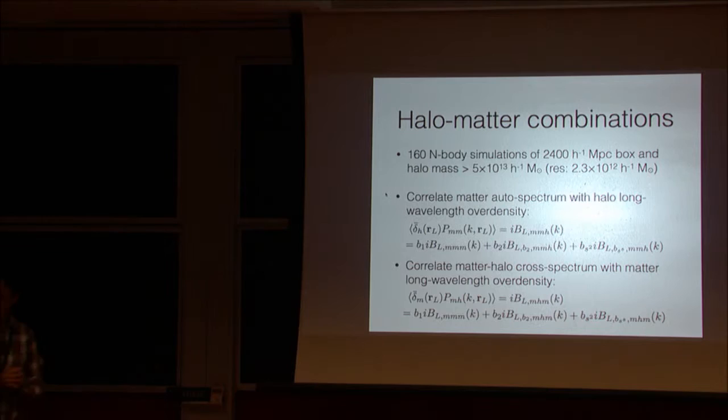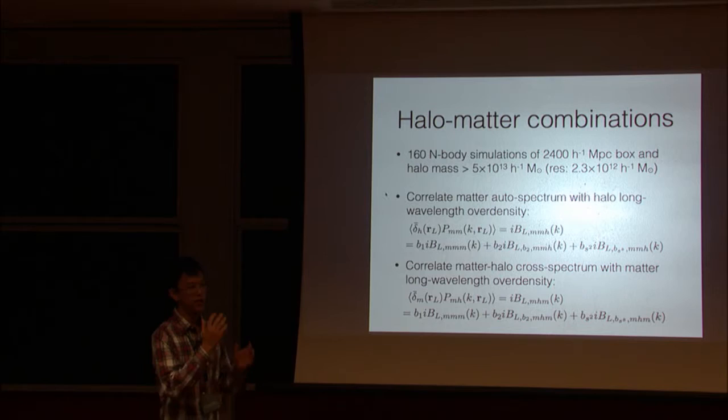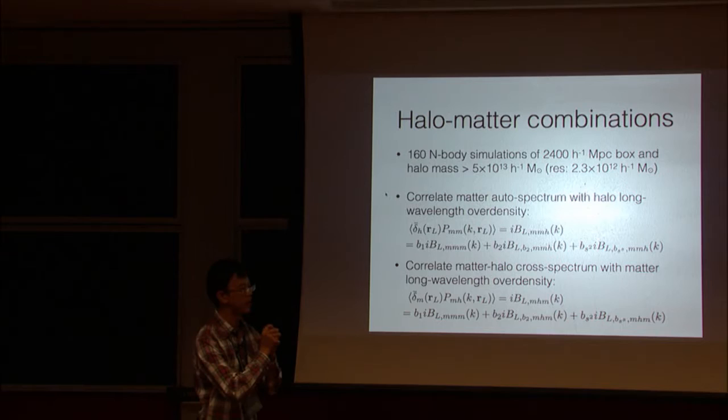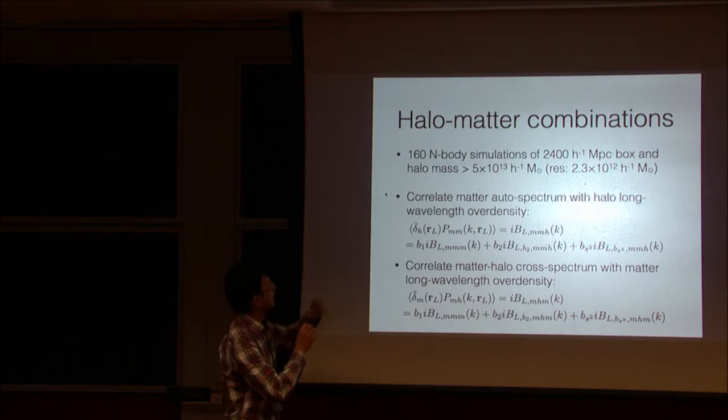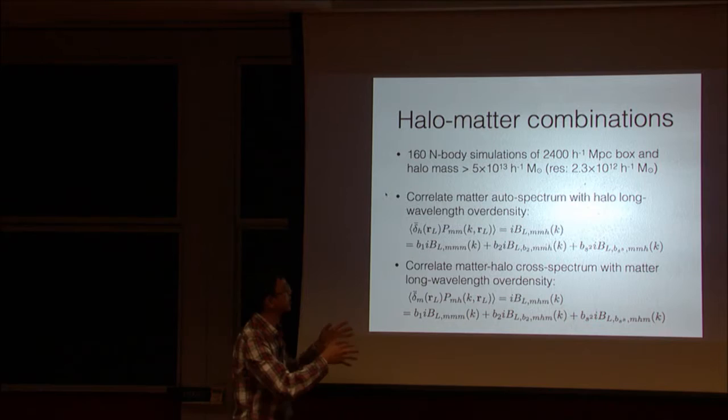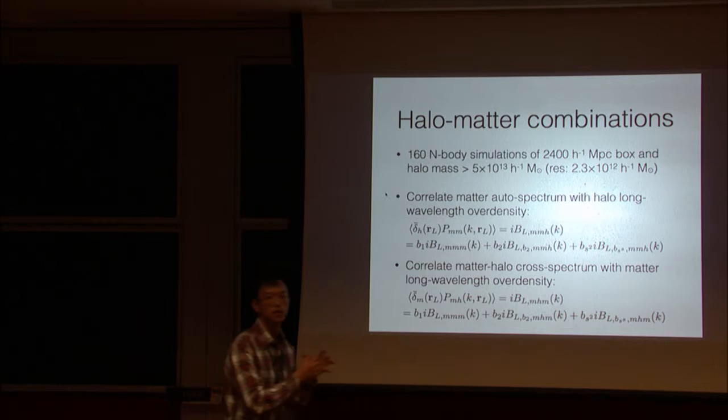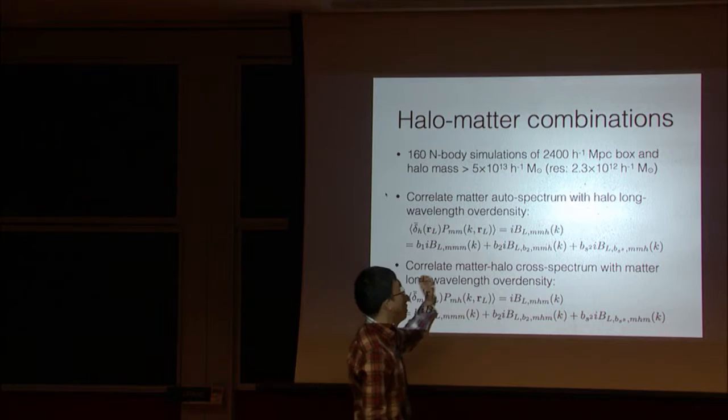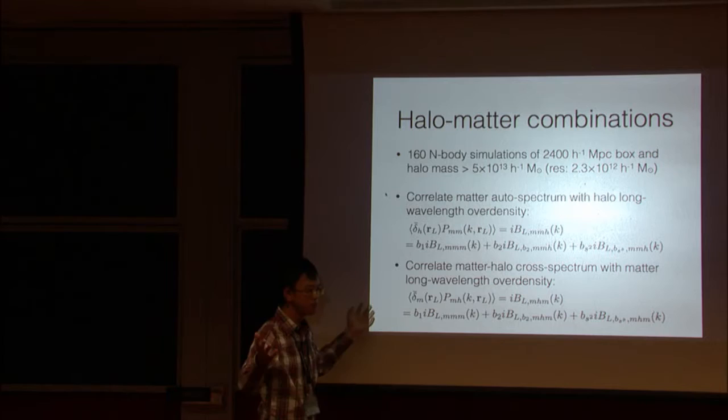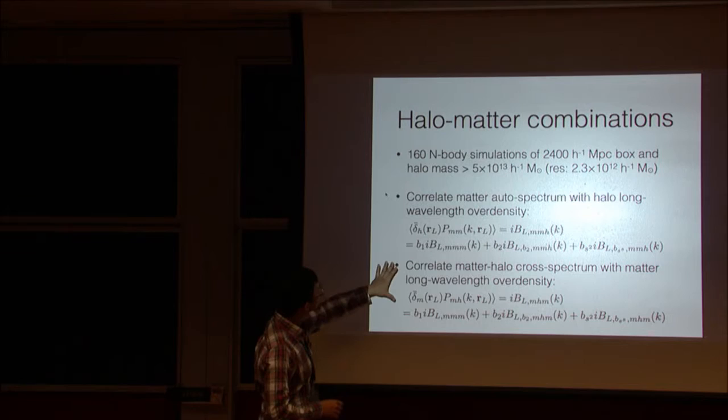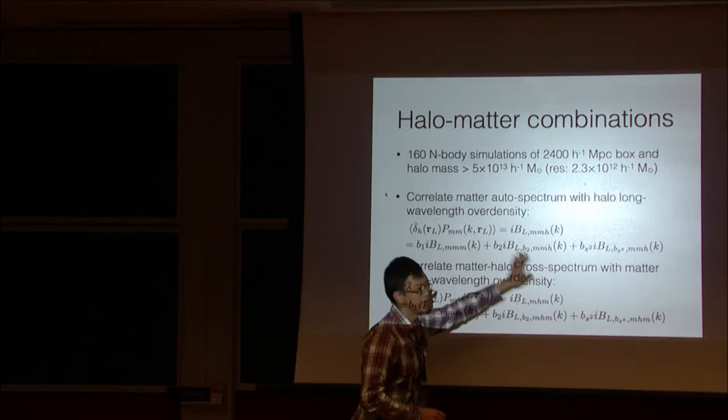So to test the goodness of the bias model, the first thing we do is to measure the bispectrum of different halo matter components. So we use, we do this test for 160 simulations of lambda-CDM cosmology and the very big simulation box, 2.4 gigaparsec cube. We divide a sub-volume, we divide a big box into smaller sub-volume. In the first case, we measure the auto matter power spectrum in the sub-volume and cross-correlate with the halo over density, long wavelength over density. In the second case, we measure the matter halo cross-spectrum in the sub-volume and cross-correlate with matter long wavelength density. So in both cases, you only have one halo field, but in the first one, if you write, you can see here, matter, matter, halo. So the third one refers to the long wavelength mode. So the second case is the MHM. And using the bias model that I just presented, you can just write it down very straightforwardly, getting two components here. So you have, it's all linear combination of B1, B2, and BS2, and B1 terms are the same for MMH and MHM, but the B2 and BS2 are different.